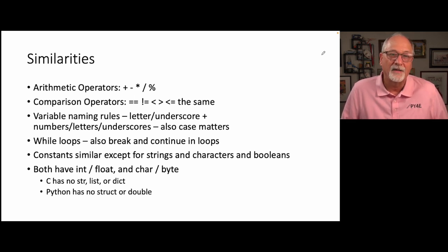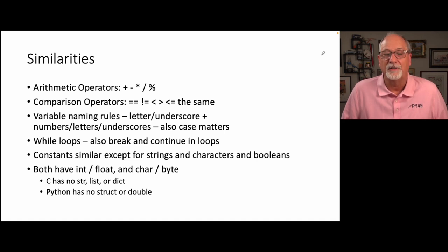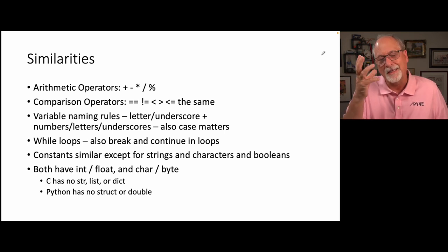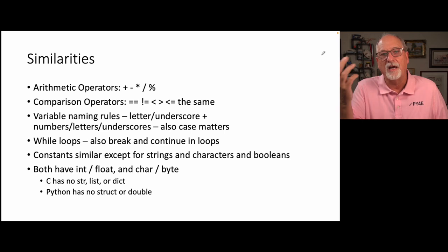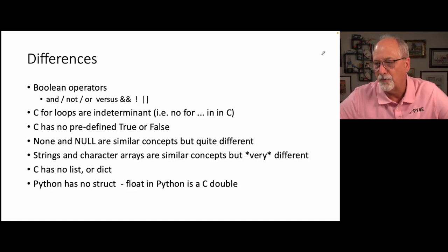About the only things that are really different in constants are strings, characters, and booleans. Both have int, float, char, and byte. C has no str class, list, or dictionary, and Python has no concept of struct or double. You could think of Python's float as really C's double — by the time Python was written, the notion of shorter floating-point numbers was less critical. A lot of this was Python trying to be a little less obtuse and a little more convenient.